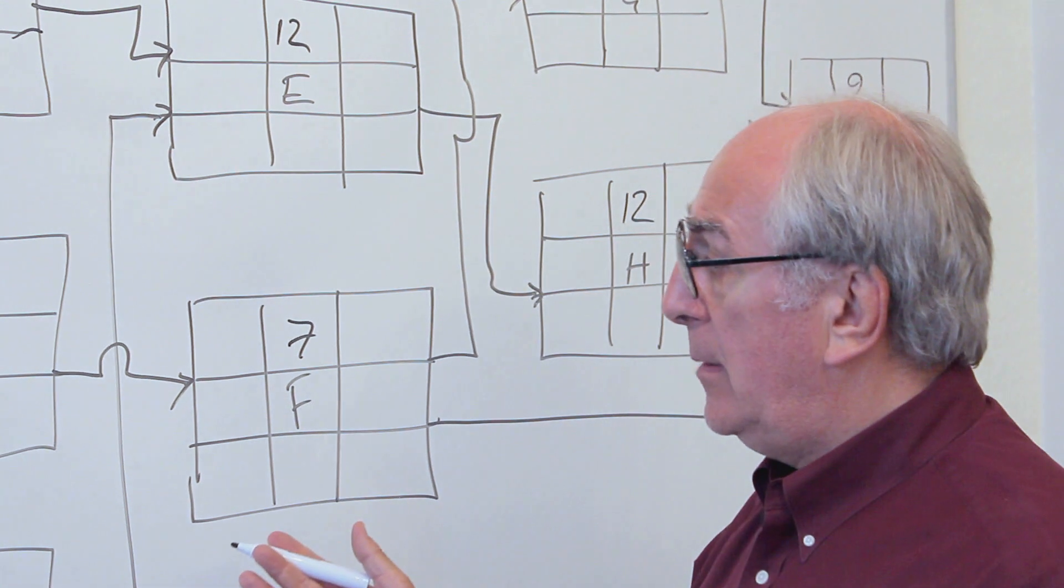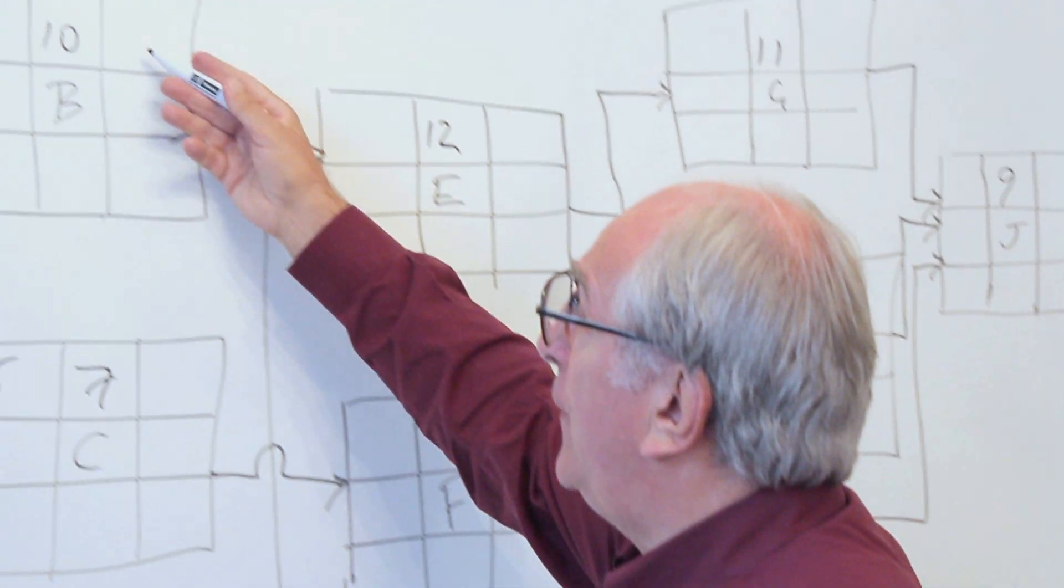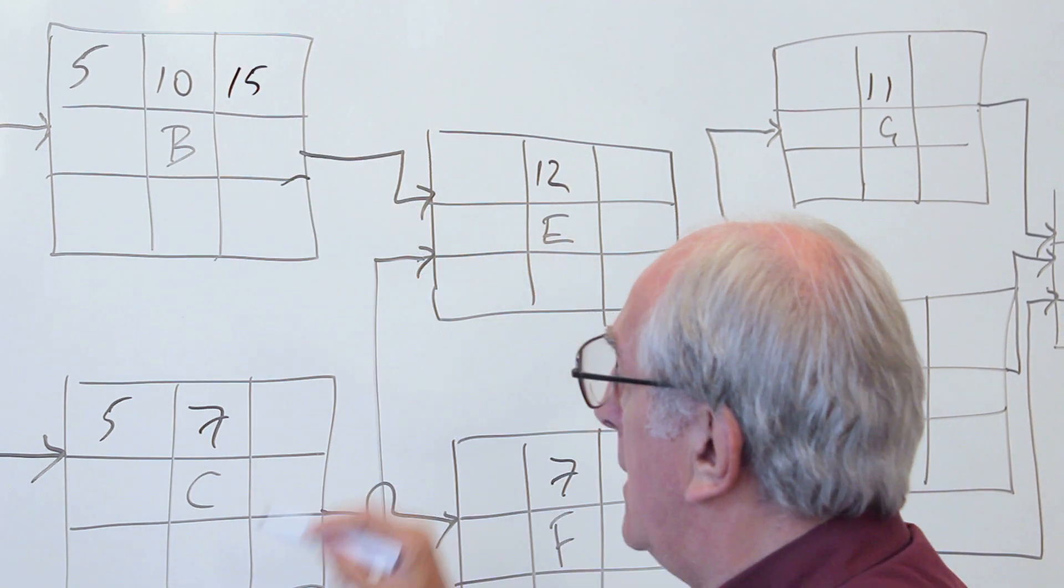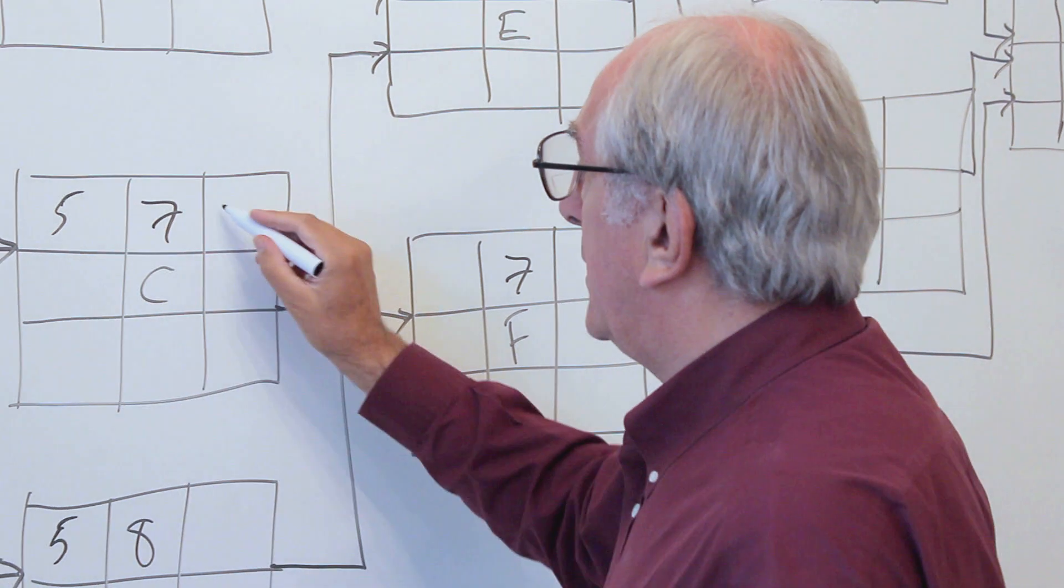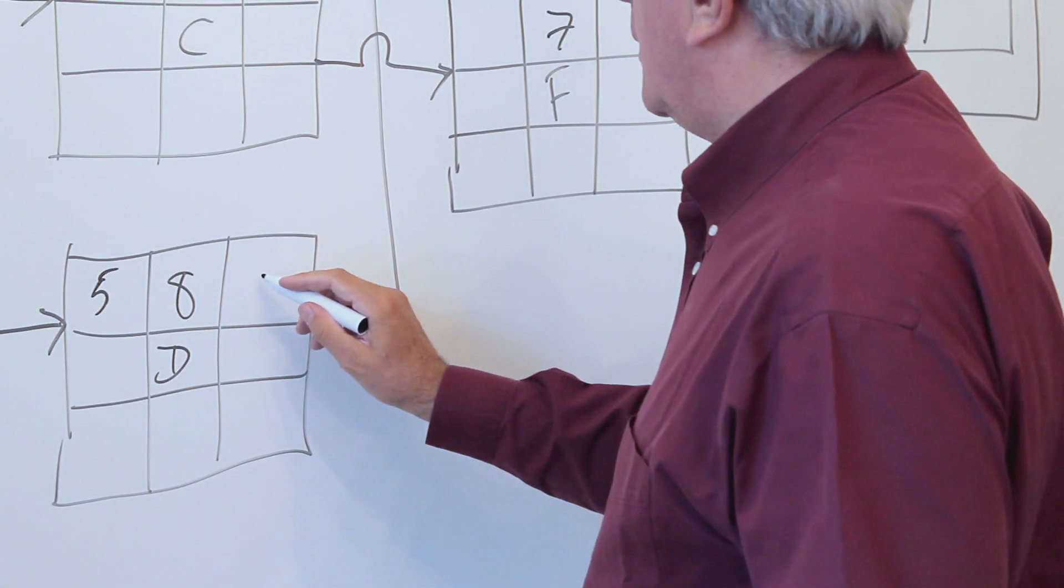That gives us the ability to move on using that equation to show that the early finish for activity B is five plus ten equals fifteen. For C it's five plus seven equals twelve, and for D it's five plus eight which would be thirteen.